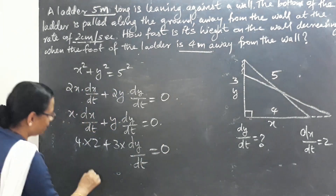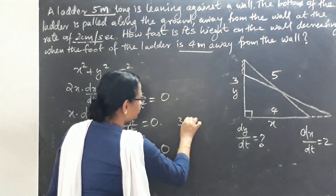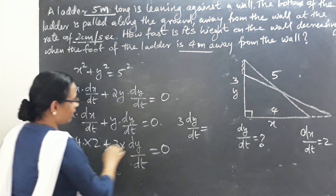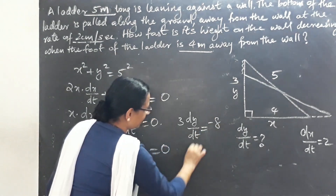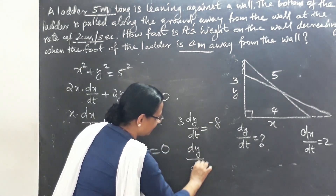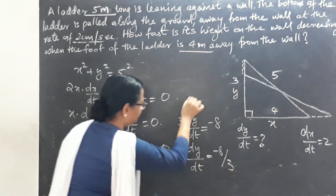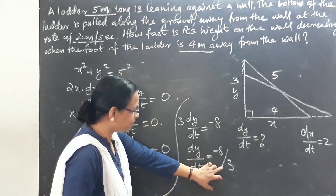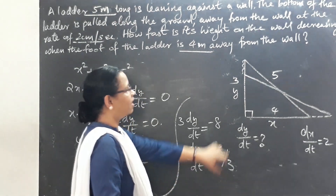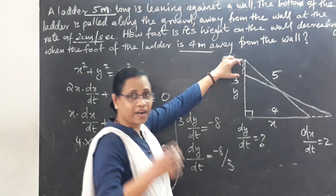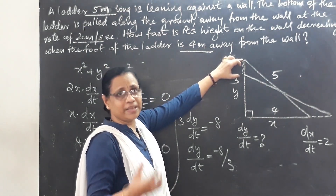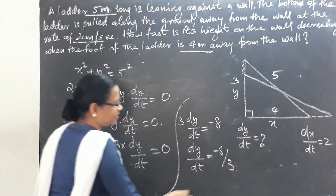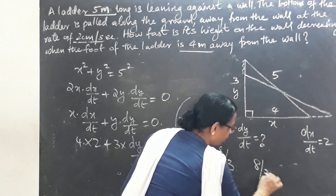Substituting: 2(4)(2) + 2(3)(dy/dt) = 0, so 3(dy/dt) = -8, giving dy/dt = -8/3 cm/s. The height is decreasing at a rate of 8/3 cm per second.